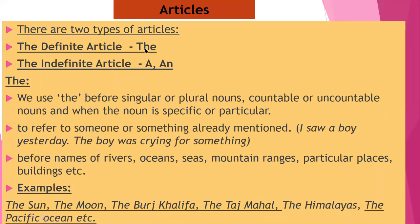First of all I will take the definite article, that is 'the'. Where do we use it? We use 'the' before a singular or plural noun, countable or uncountable nouns, or when the noun is specific or particular. For example, singular: a book, and in plural: the books. Countable — which we can count — and uncountable — which we cannot count. When something is specific or particular, then we use 'the'.